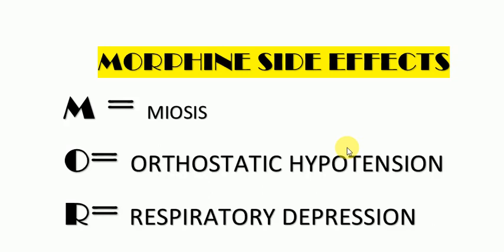Hello friends, today I'm going to tell you about the effects of morphine. The mnemonic is MORPHINE. M for miosis, O for orthostatic hypotension, R for respiratory depression.